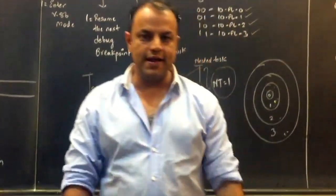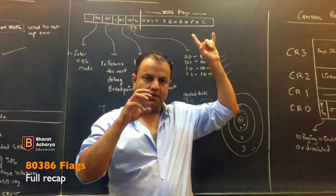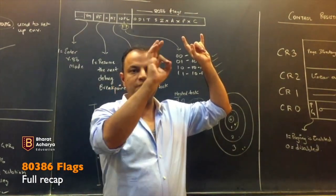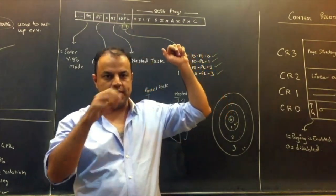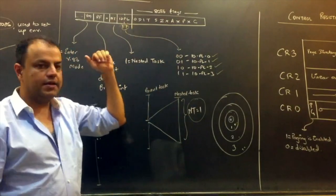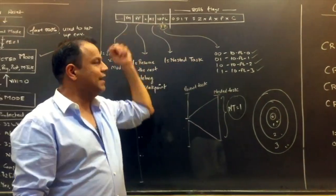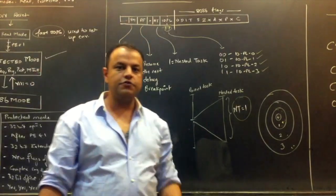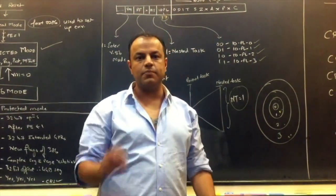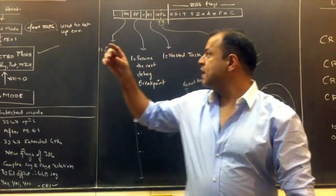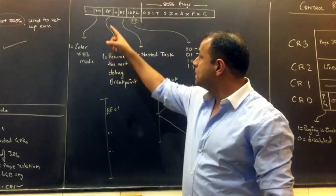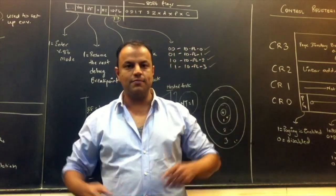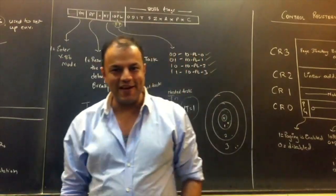Recap: IOPL is the privilege level assigned to IO devices — it's 2 bits. If set to 10 (decimal 2), only programs of PL0, PL1, and PL2 can access IO devices; PL3 cannot. NT indicates whether it's a parent task (NT=0) or nested task (NT=1). The don't-care bit is reserved for future use. RF — Resume Flag — skips the next debug breakpoint when set to 1 and automatically becomes 0 after resuming. VM — Virtual 86 mode — lets a programmer enter virtual 86 mode from protected mode. These flags are available only in protected mode.